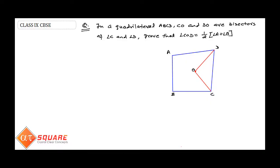Hello students. In this question, it is given that in triangle ABC, CO and DO are bisectors of angle C and angle D respectively. We have to prove that angle COD is equal to half of angle A plus angle B. Since CO is the bisector of angle C, the two parts are equal — assign it angle one. And OD is also a bisector of angle D, so these two angles are equal.